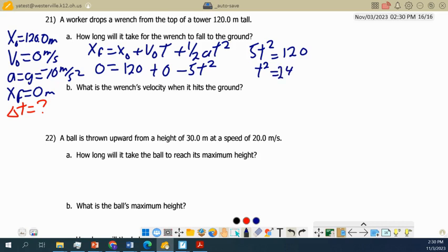When we take our square root, t equals square root of 24, which is 4.9 seconds. We're talking about time, so our answer here is in seconds.